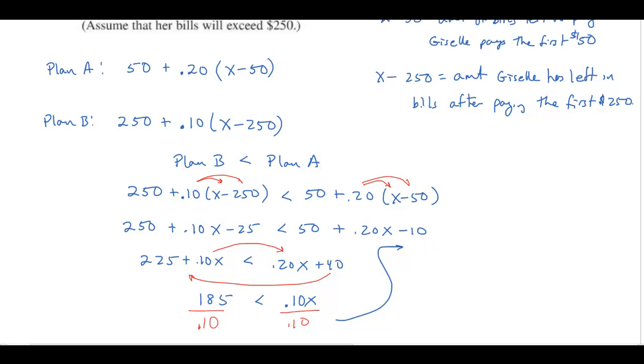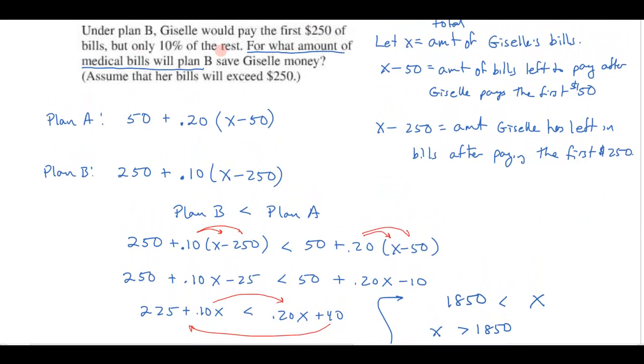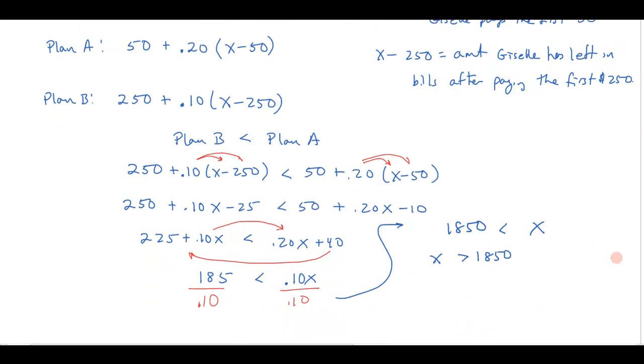Let me keep it on the same side like I have it here. I get x over on this side all by himself is greater than 1850. So let's turn that around in English. I got my x greater than 1850 and again my question, coming back up here to my problem, for what amount of medical bills will Plan B save Giselle money? So if her bills are more than $1850, Plan B will cost Giselle less.